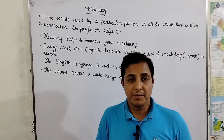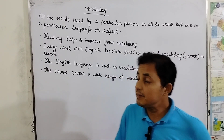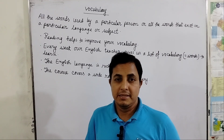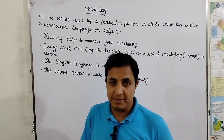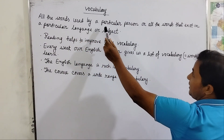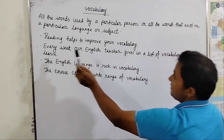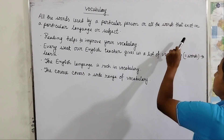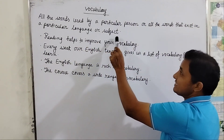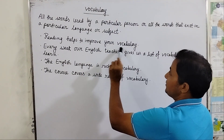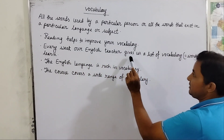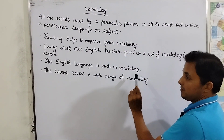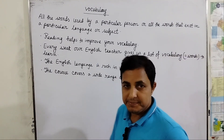Now let's begin. Vocabulary is another alternative word — we are mainly known to 'word', but its other name is vocabulary. Its English meaning is: all the words used by a particular person, or all the words that exist in a particular language or subject. Example: reading helps to improve your vocabulary. Every week our English teacher gives us a list of vocabulary words to learn. The English language has a rich vocabulary. The course covers a wide range of vocabulary.